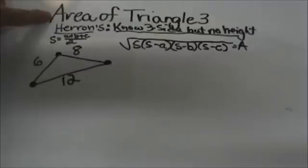This formula is used if you don't know the height of the triangle. You only have the three sides. This is called Heron's formula.